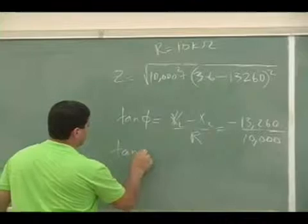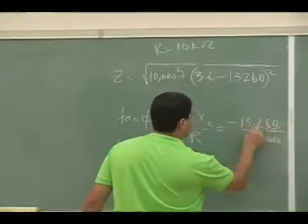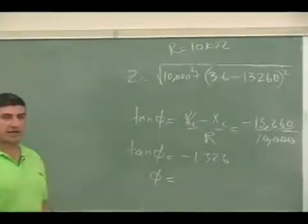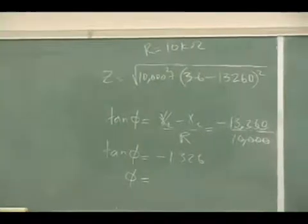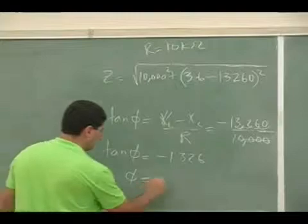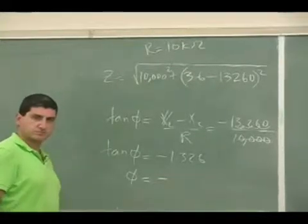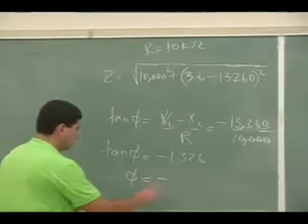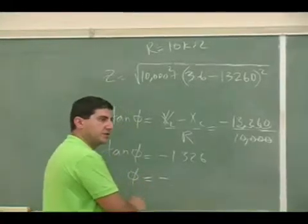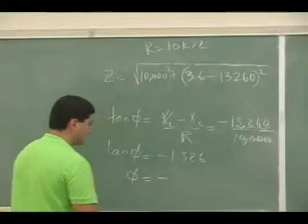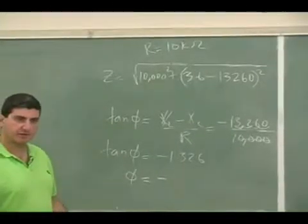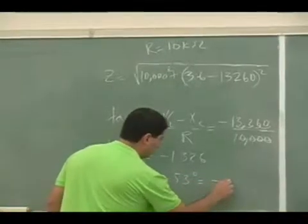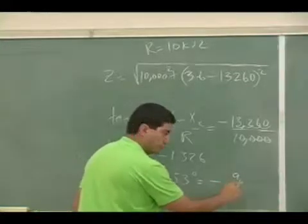So tangent of the phase angle, so tan inverse of that, so negative how much is that? Give me in degrees, and then we'll change it to rads. So it should be like 60 degrees or 50, 53 degrees. And then in rads it's going to be 0.92 rads.